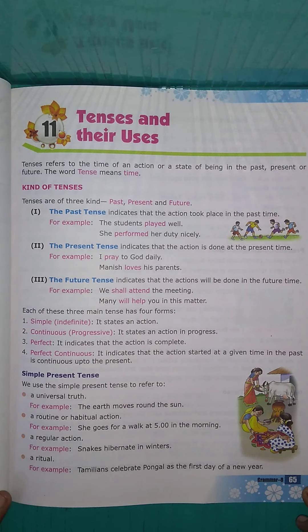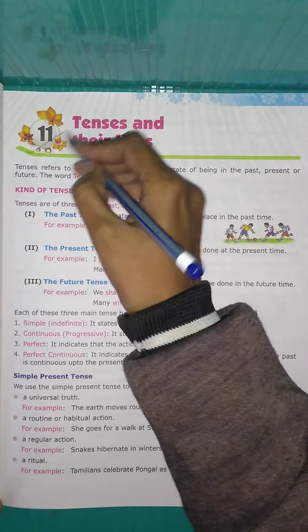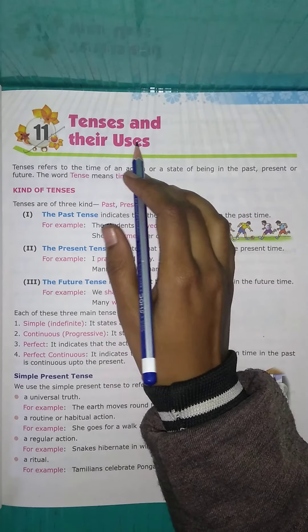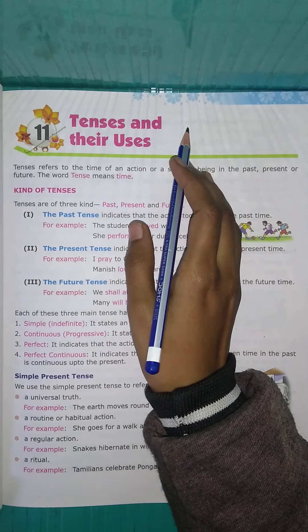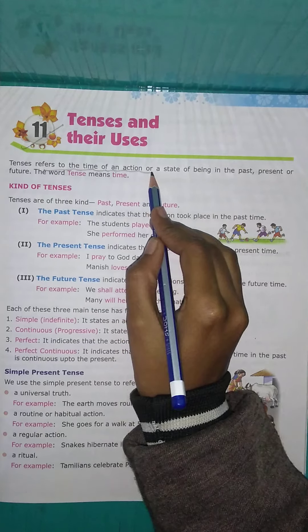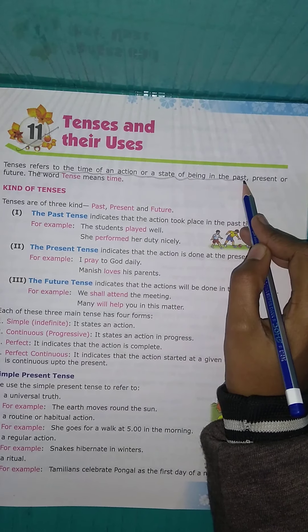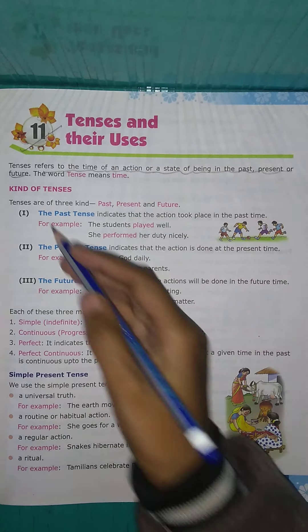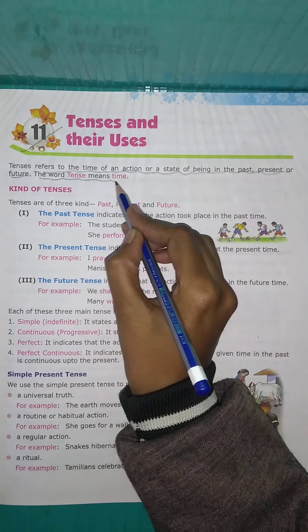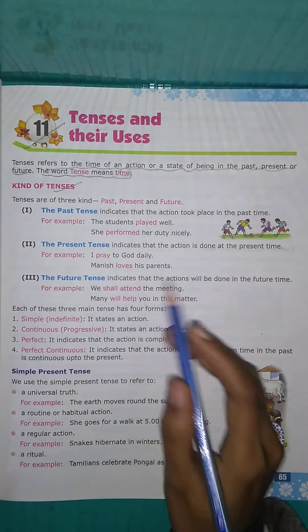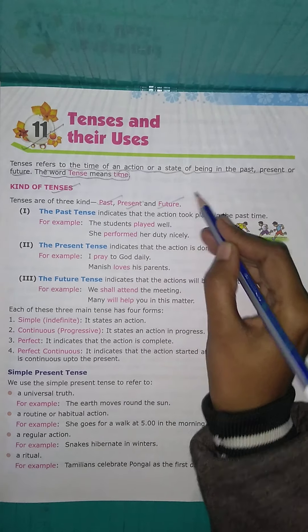Good morning, eighth class. Today we are going to start Chapter 11 of English grammar — Tenses and Their Uses. Tenses refer to the time of an action or a state of being in the past, present, or future. The word tense means time, and there are three kinds of tenses: past, present, and future.